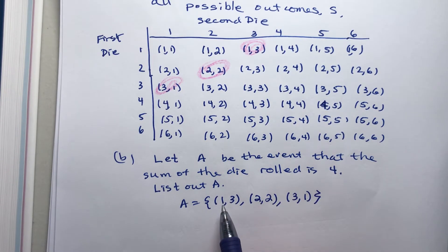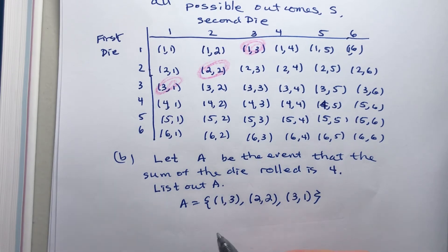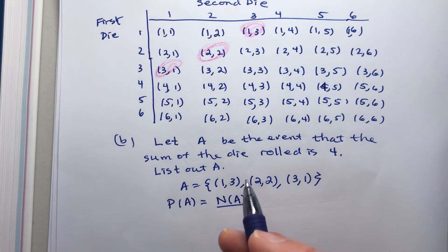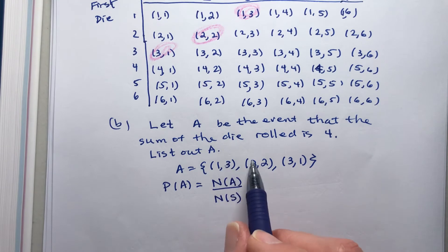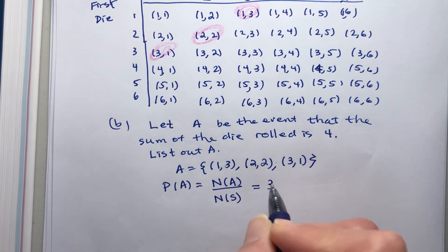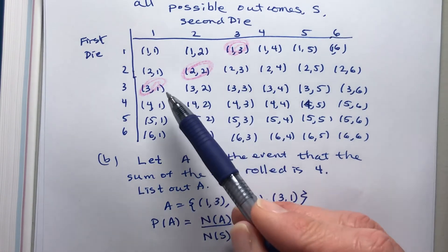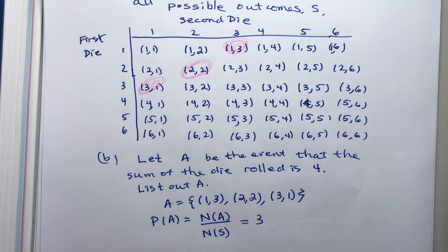So I started off with the least number you can roll on the first die, which is one, and then I moved that. I went one, two, and three, and I found the other number that makes the sum of four. So the probability of A is equal to the number of elements in A divided by the number of elements in the sample space. So how many things are there in A? There's three. And they're all equally likely to happen. Look up here: one, two, three. So there's three ways you can roll four as a sum.